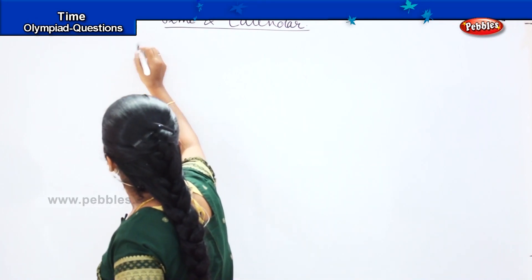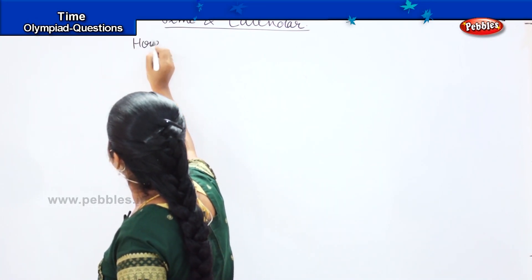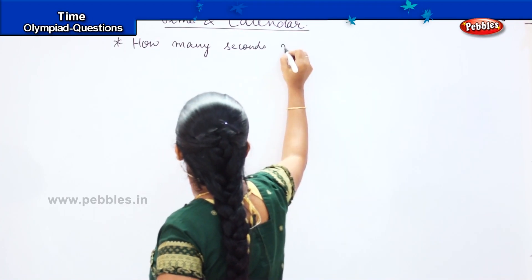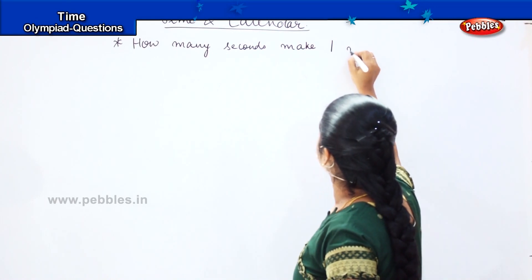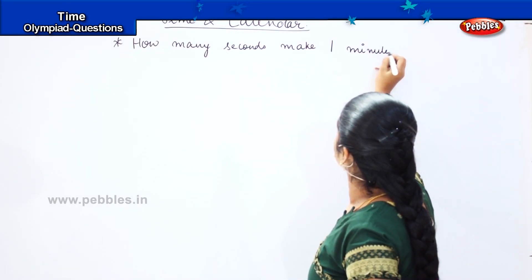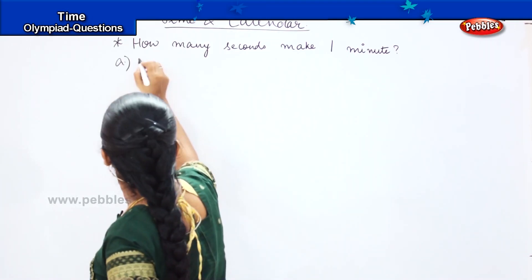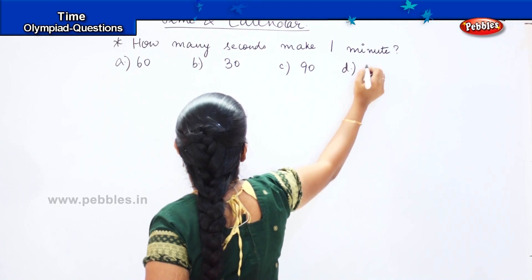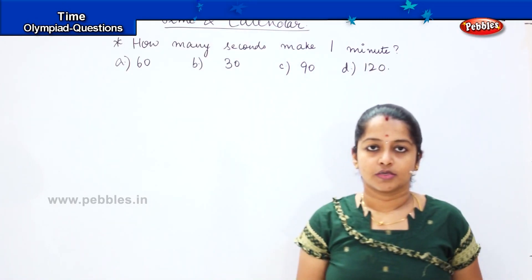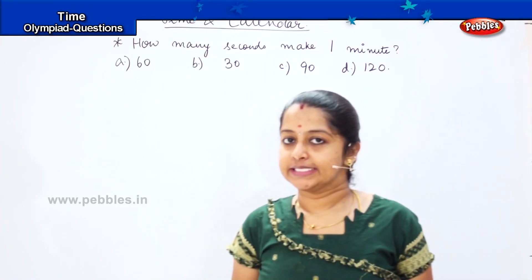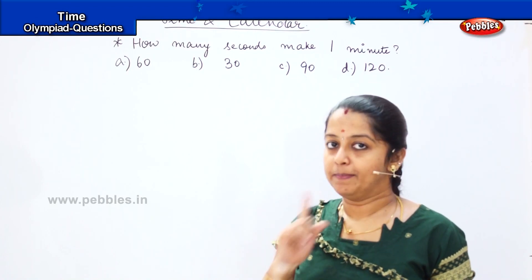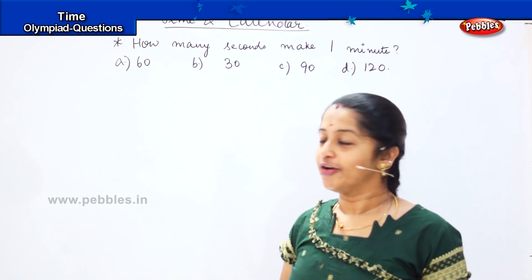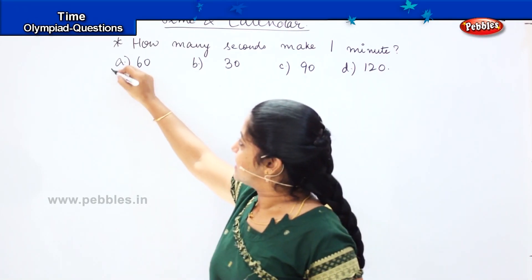Your question is: how many seconds make one minute? Your options are 60, 30, 90, and 120. If you remember, I taught you in the beginning of the class that 60 seconds make one minute. So the answer is option A, which is 60.